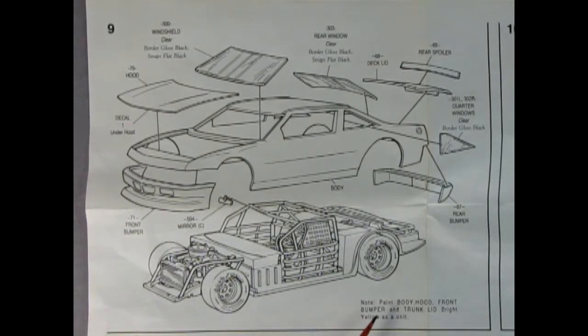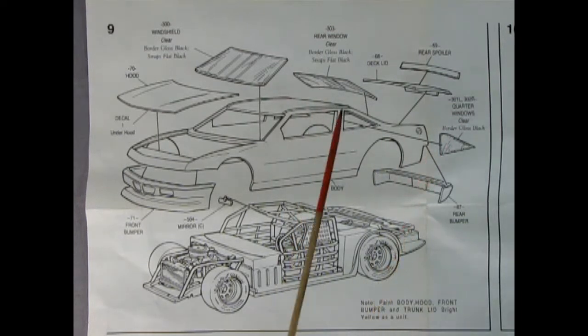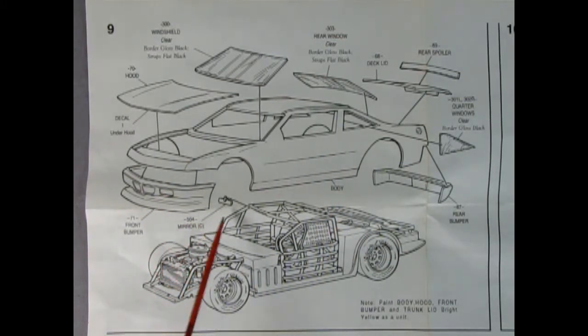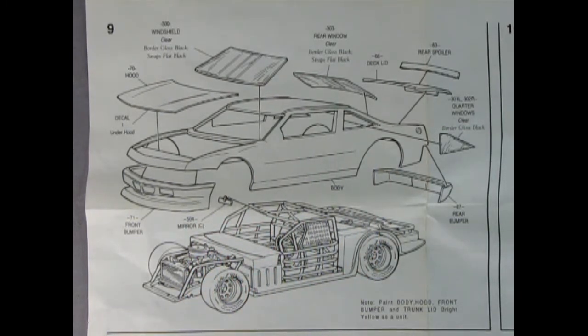Panel nine is where the body meets the chassis. It says note paint trunk, hood, front bumper, and trunk lid bright yellow as a unit. I like to kind of keep them separated. There's our windshield, our rear window, side windows. There's our deck lid, our rear spoiler, our rear bumper, our front bumper, the body, and the rear view mirror. I thought we already put that in. Well, at any rate, there it all is. And that's how it's going to look.